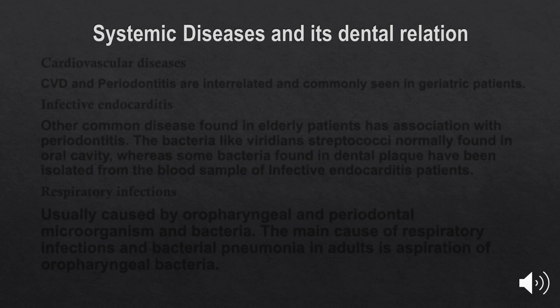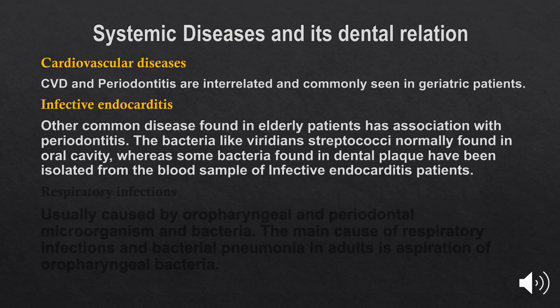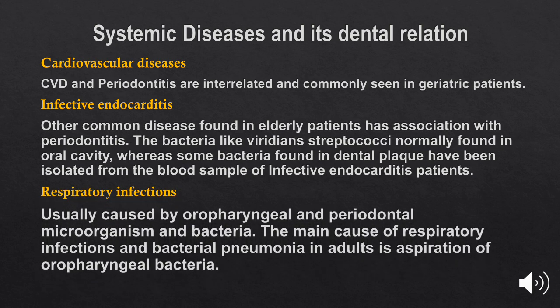Systemic diseases and their dental relations: cardiovascular diseases and periodontitis are interrelated and commonly seen in geriatric patients. Infective endocarditis and other common diseases found in elderly patients are associated with periodontitis. Bacteria such as viridans streptococci are normally found in the oral cavity, and some bacteria found in dental plaque have been isolated from blood samples of infective endocarditis patients. Respiratory infections are usually caused by oropharyngeal and periodontal microorganisms; the main cause of respiratory infection and bacterial pneumonia in adults is aspiration of oropharyngeal bacteria.